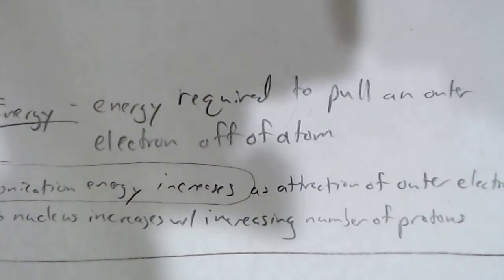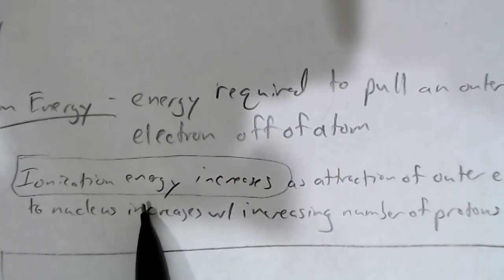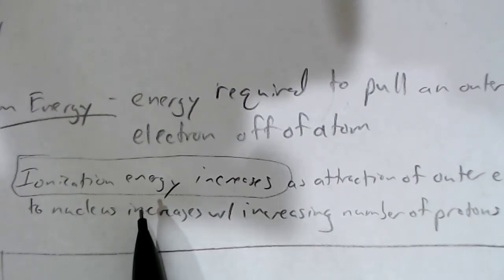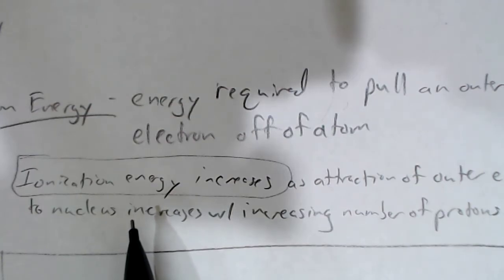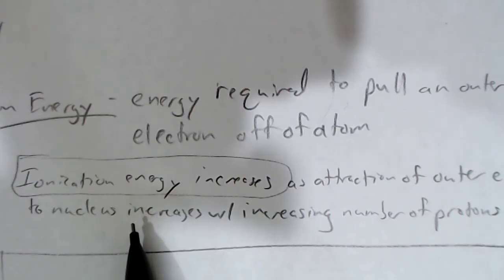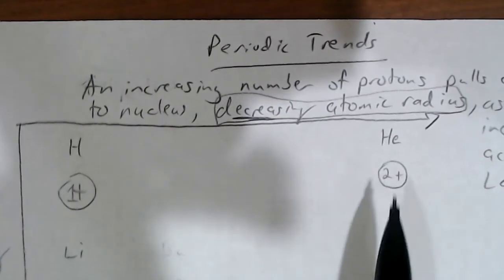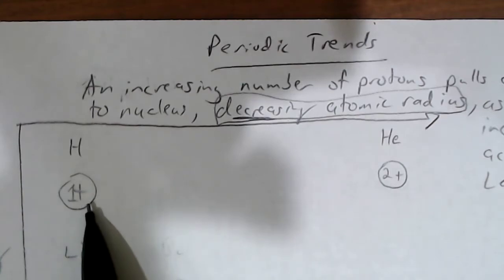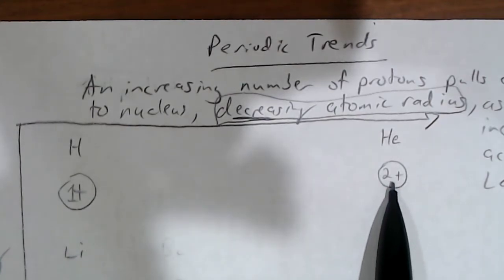An ion has a positive or negative charge — in this case, making a positive charge. As you go to the right in the periodic table, ionization energy will increase. This is because you get more and more protons, which pull those outer electrons more tightly to the nucleus. So you'll need more energy to pull those electrons off. For example, it's harder to pull an electron off of helium than hydrogen because helium has twice as much positive charge holding that negative electron.